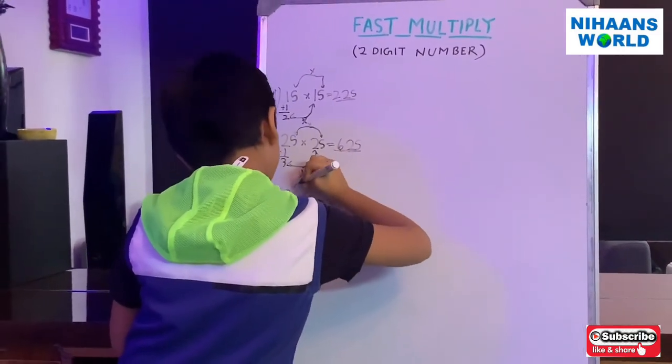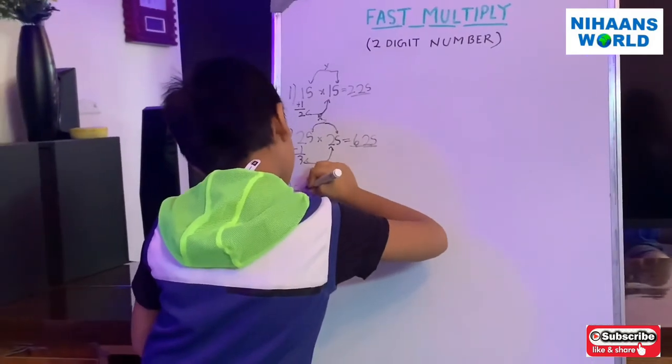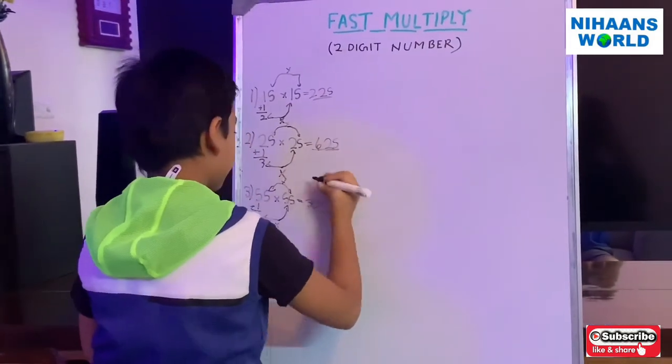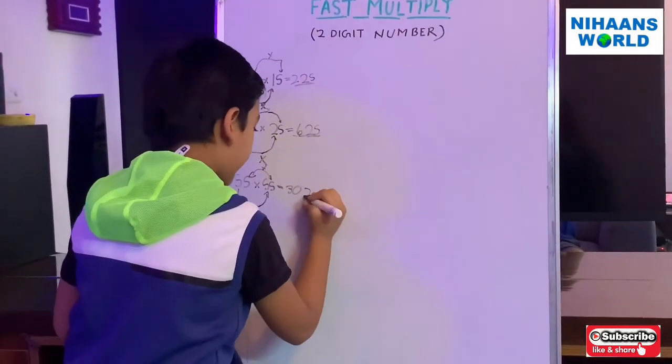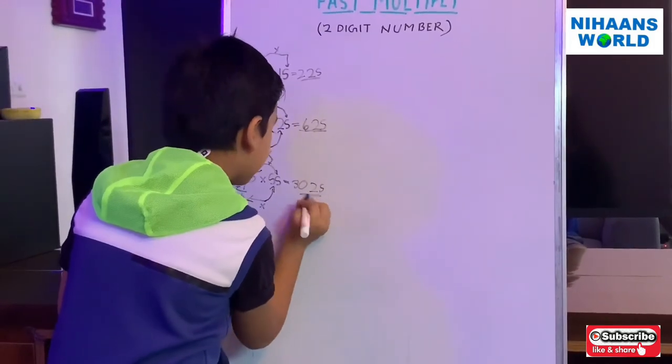And 5 multiplied by 5. That is 25. So this is the answer.